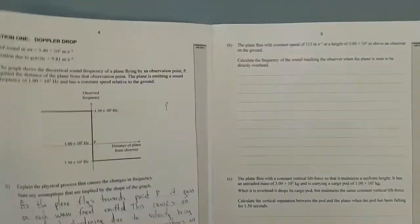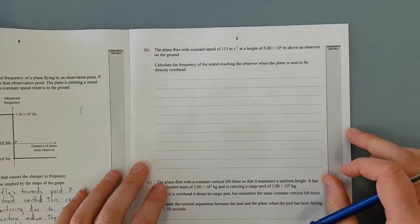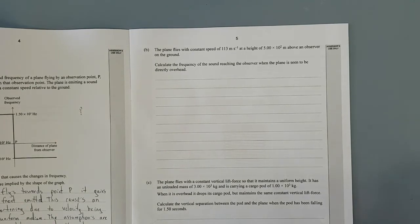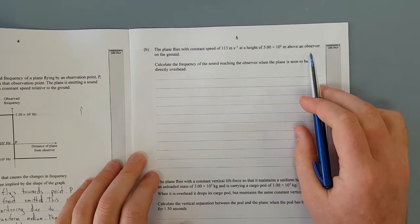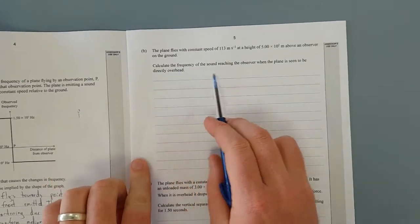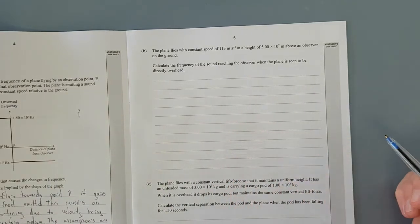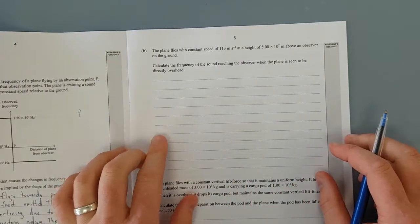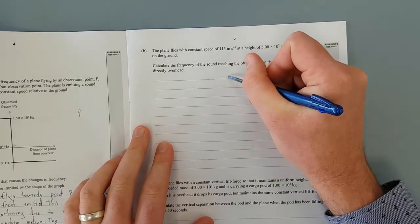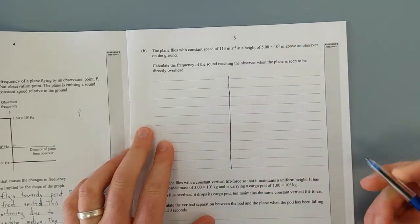The plane flies with a constant speed of 113 metres per second at a height of 500 metres from the observer on the ground. Calculate the frequency of the sound reaching the observer when the plane is seen to be directly overhead. So this is going to be a bit tricky but I'll break this page in half and we should easily be able to knock it out.